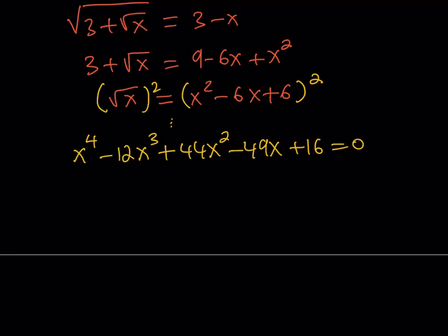First of all, one of the things that you should always check, and I think I keep saying this in different videos, is the sum of the coefficients, because you should always check if x equals one is a candidate. If you add the coefficients, I will add the positive ones first. So one plus 44 is 45, 45 plus 16 is equal to 61, negative 12 plus negative 49 is equal to negative 61. Therefore, the sum of the coefficients is equal to zero.